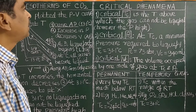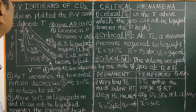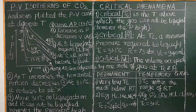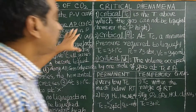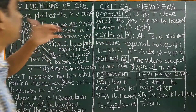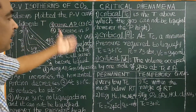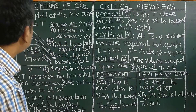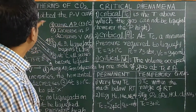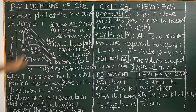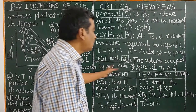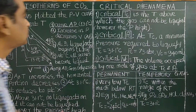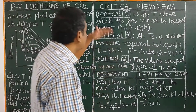Good morning. Today we will study PV isotherms of carbon dioxide and critical phenomena — critical temperature, critical pressure, and volume — obtained from Andrews' PV isotherm plots. We will also see what are permanent gases and temporary gases, which are also based on critical temperature.